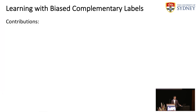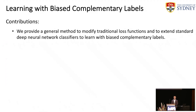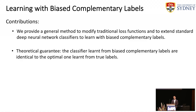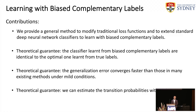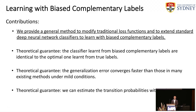The contributions of our method are: first, we provide a general method to modify traditional loss functions and extend standard deep neural network classifiers to learn with biased complementary labels. Second, we prove that the classifier learned from biased complementary labels can be identical to that learned from true labels. Third, we prove that the generalization error converges faster than many existing methods under mild conditions. We can also estimate the transition probability without bias. Today, I mainly focus on the first contribution. For more details about the theoretical results, please refer to our ECCV paper.